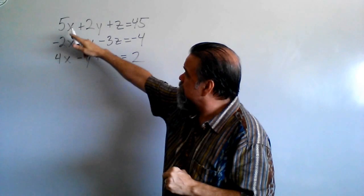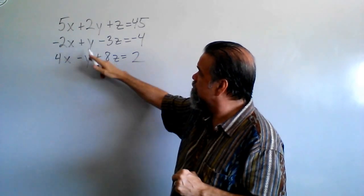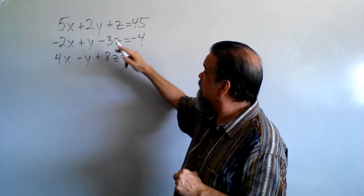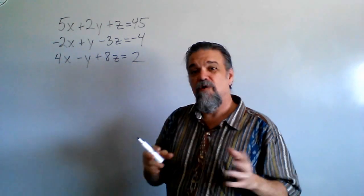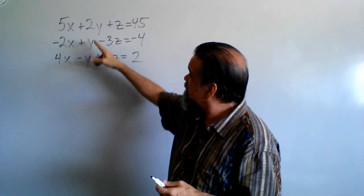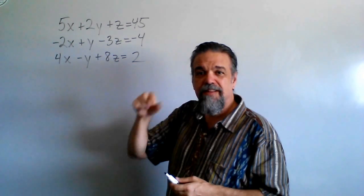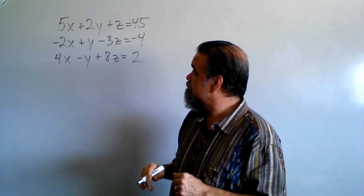And as I look at my x's, I got 5x, negative 2x, 4x. I look at my y's, 2y, y, and negative y. That looks pretty good. And I look at my z's, z, negative 3z, 8z. I'm going to go for the y's. Why am I going for the y's? Because 2y, positive y, negative y, they're nice small numbers, and I can combine them very easily to get rid of them.